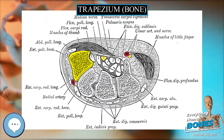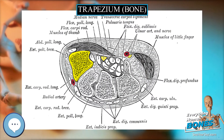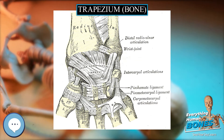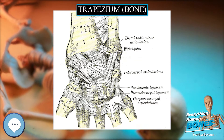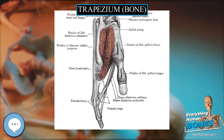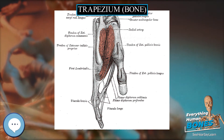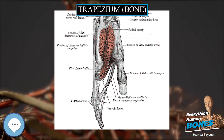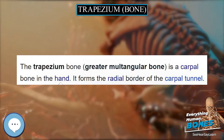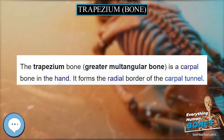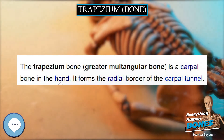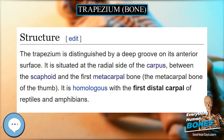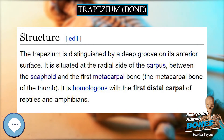The inferior surface is oval, concave from side to side, convex from before backward, so as to form a saddle-shaped surface for articulation with the base of the first metacarpal bone. This saddle-shaped articulation is partially responsible for the thumb's opposable motion. The dorsal surface is smooth.